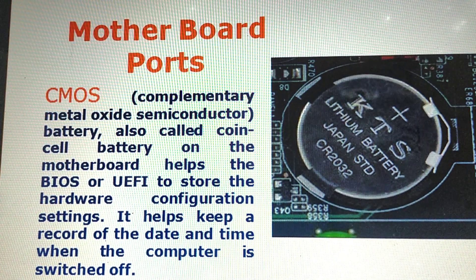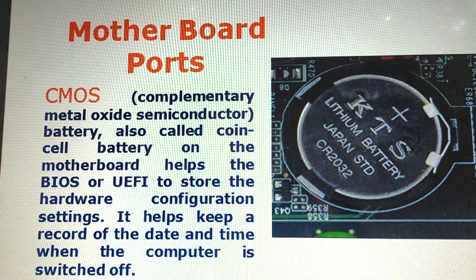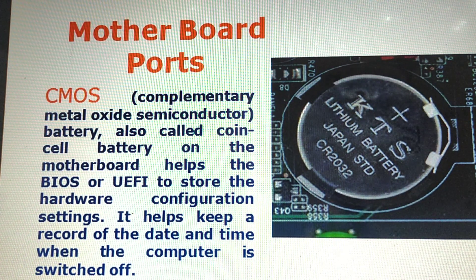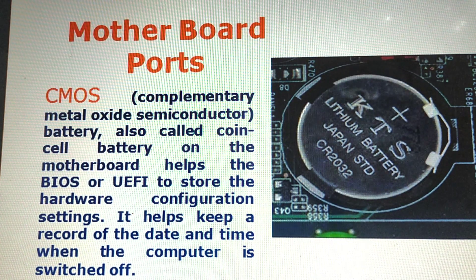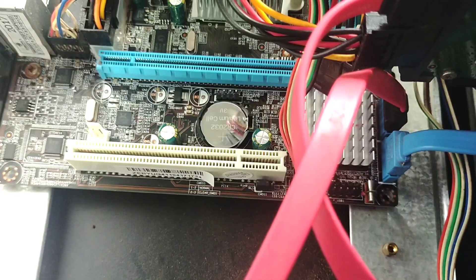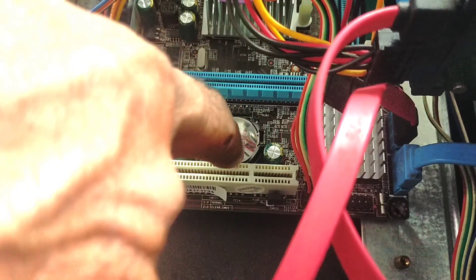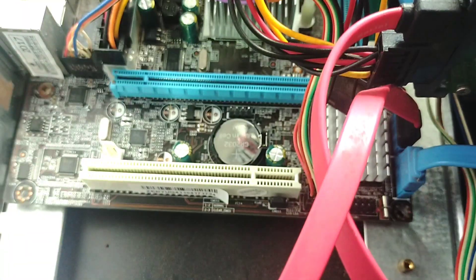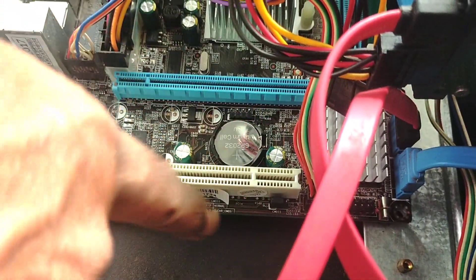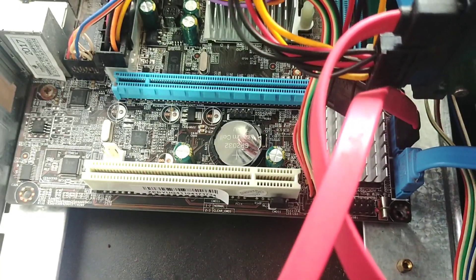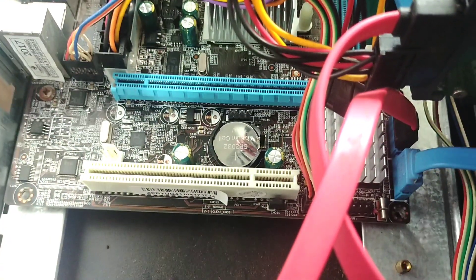CMOS battery — it is a complementary metal-oxide semiconductor battery, also called a coin cell battery. It helps the BIOS store hardware configuration settings and keeps a record of the date and time when the computer is switched off. This is the lithium CMOS battery for backing up timing and the BIOS.